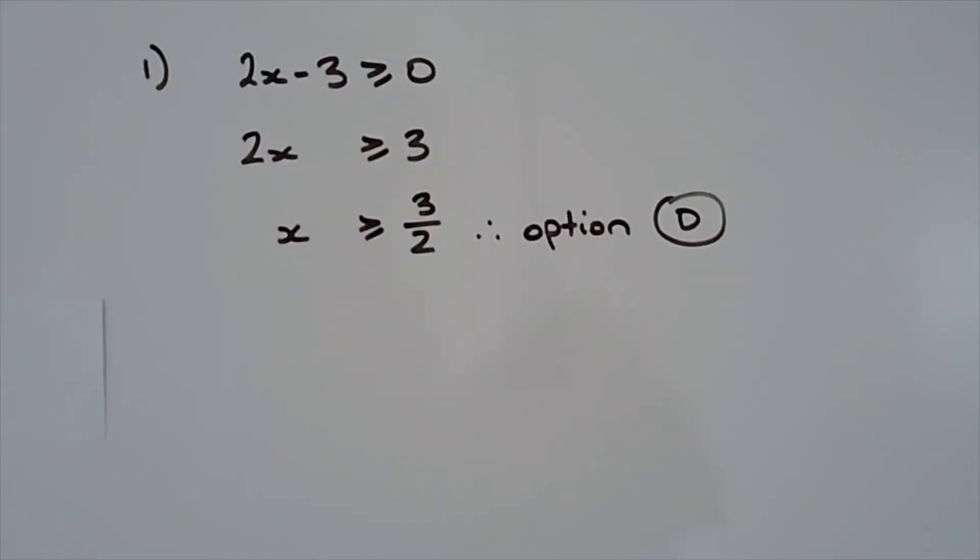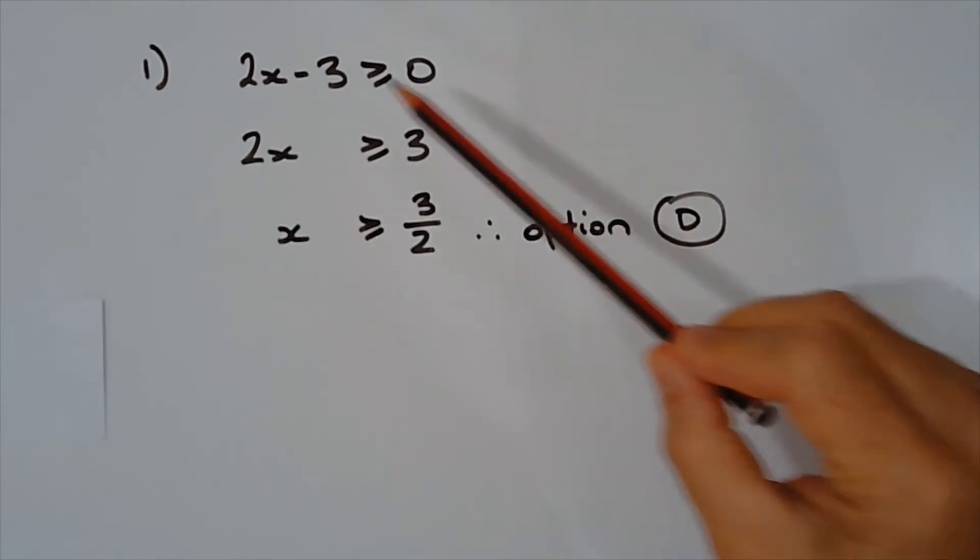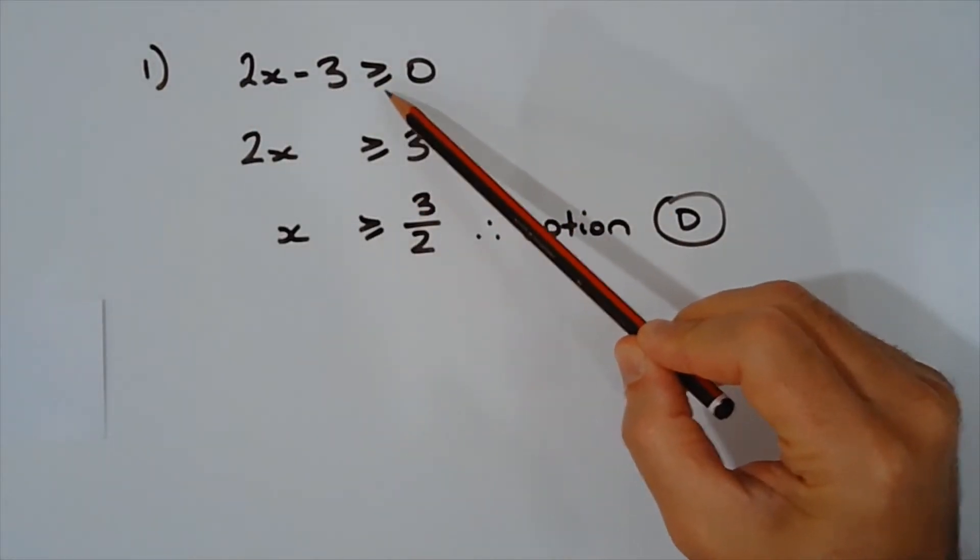Now what's inside the square root must be greater than or equal to 0. That means 2x minus 3 must be greater than or equal to 0.